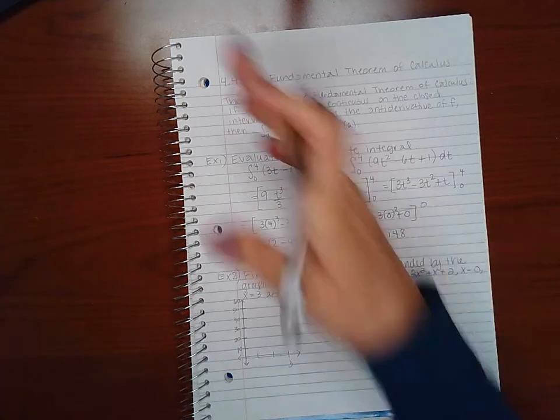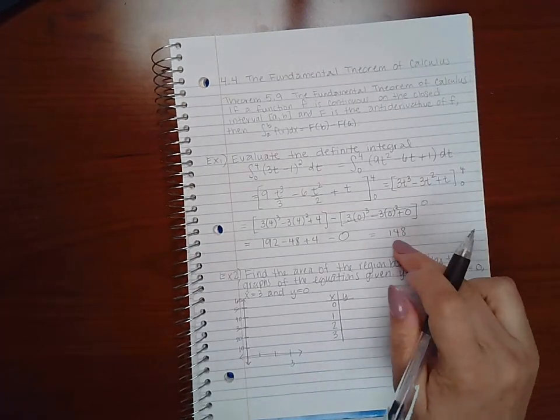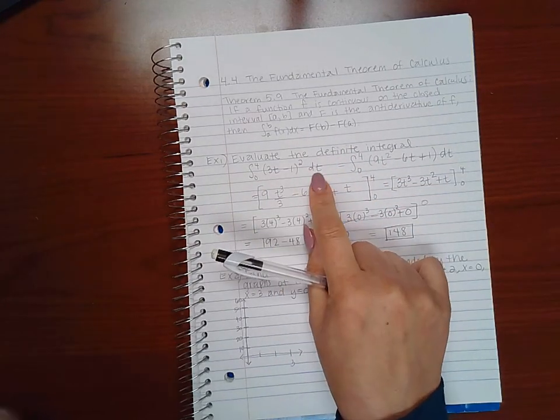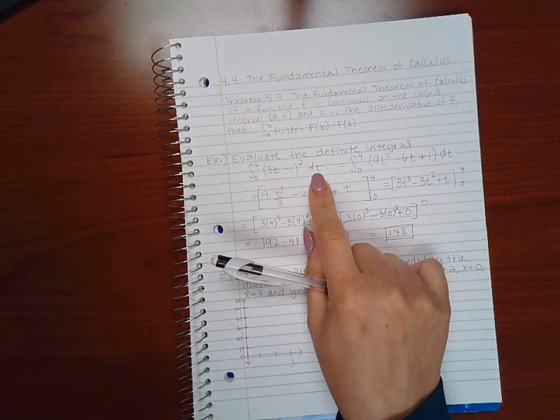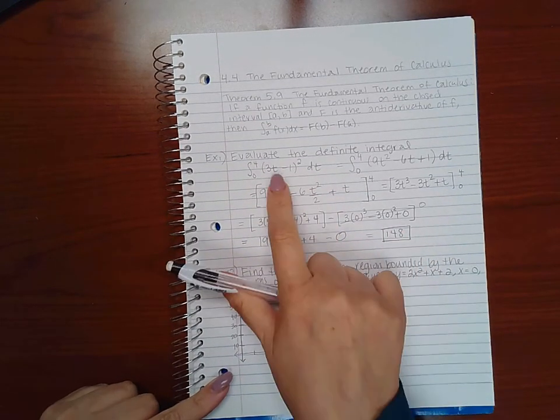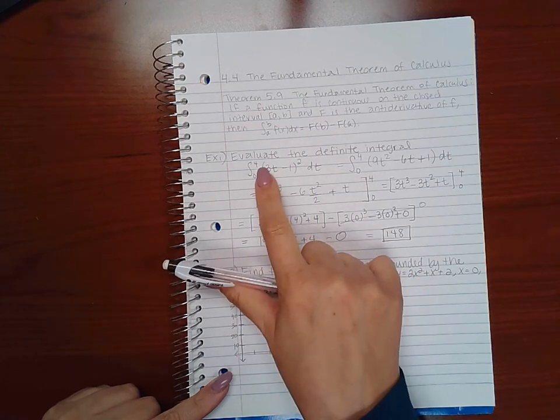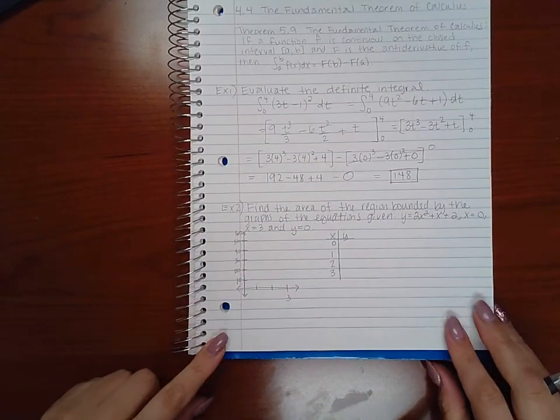So this is the definite integral value. Now remember, definite integral value actually represents area. So really what I have found is the area underneath this function from 0 to 4.